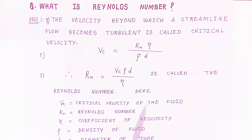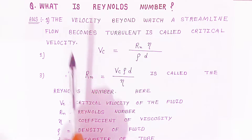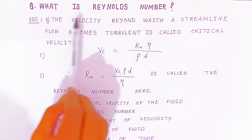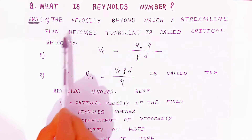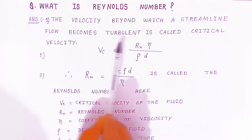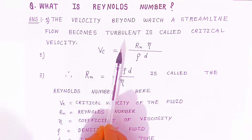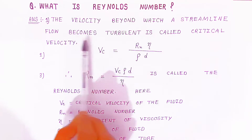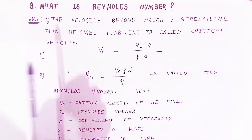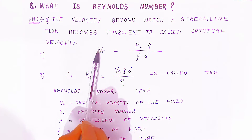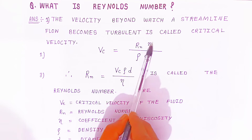Now, one more question is there — sometimes they are asking this, for two-mark questions. What is the Reynolds number? The velocity beyond which streamline flow becomes turbulent — that velocity is called critical velocity. What is the definition of critical velocity? The velocity beyond which streamline flow becomes turbulent is called critical velocity.